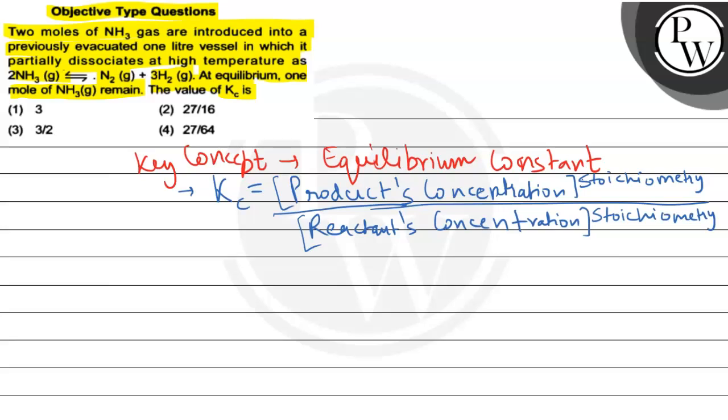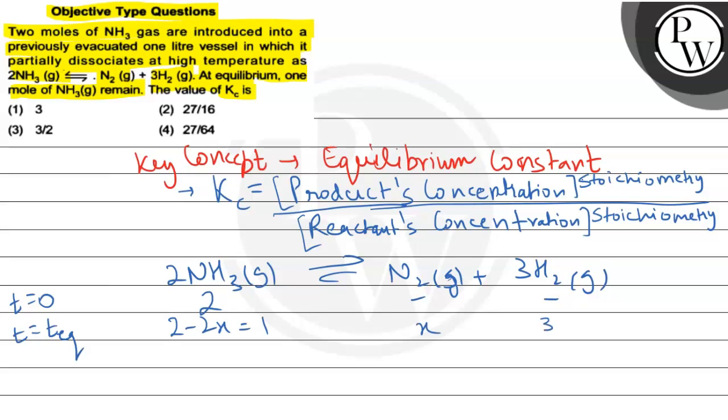If we talk about this reaction, we have given 2 moles of ammonia gas in equilibrium with N2 gas plus 3 moles of H2 gas. At time equals to zero, that is initially, we have 2 moles and there was nothing. At time equals to equilibrium, we have 2 minus 2x for NH3. We are talking about 2 minus 2x equals to 1, and x is produced here and 3x is produced here.